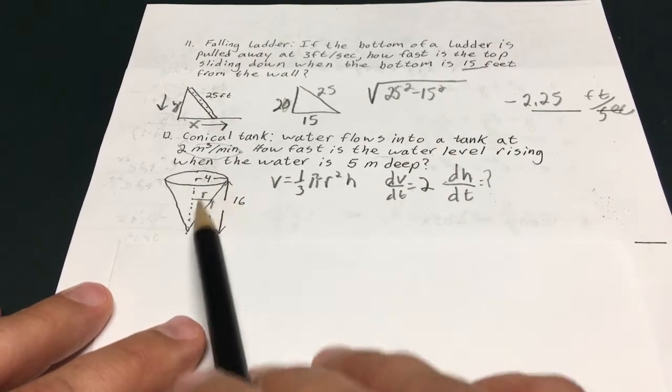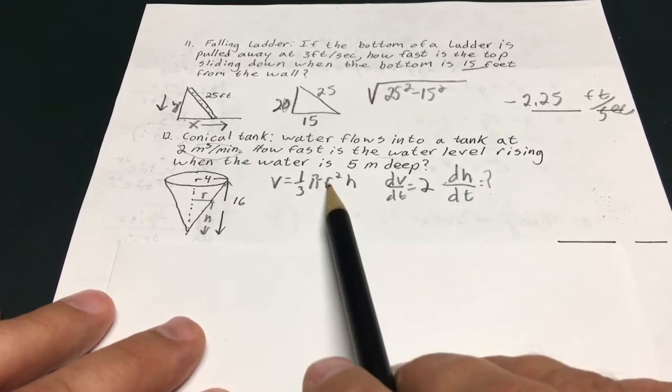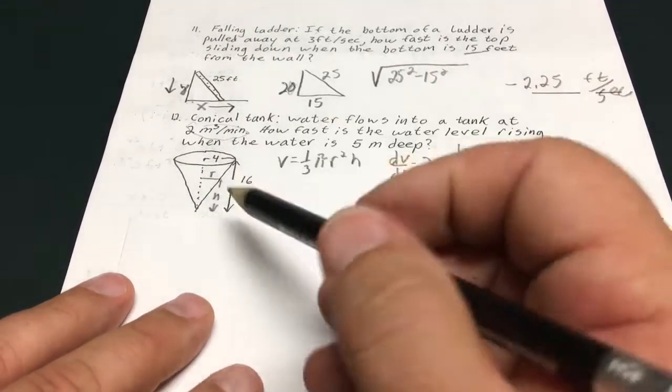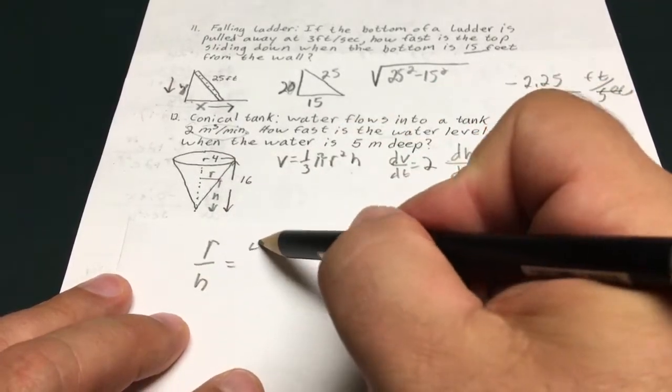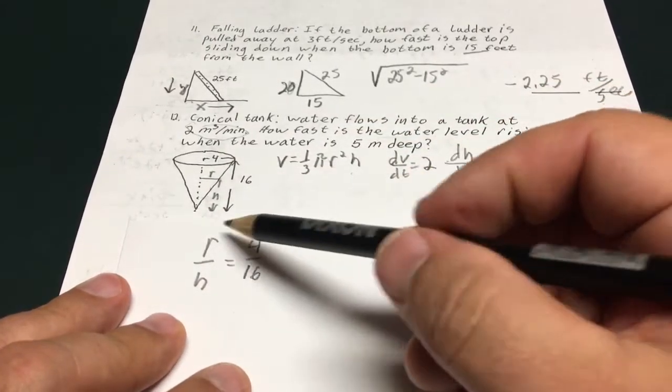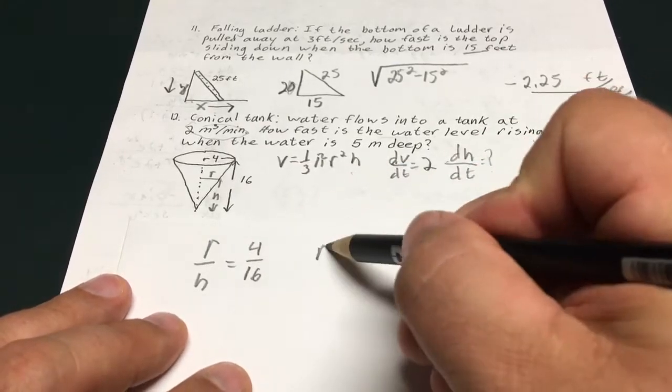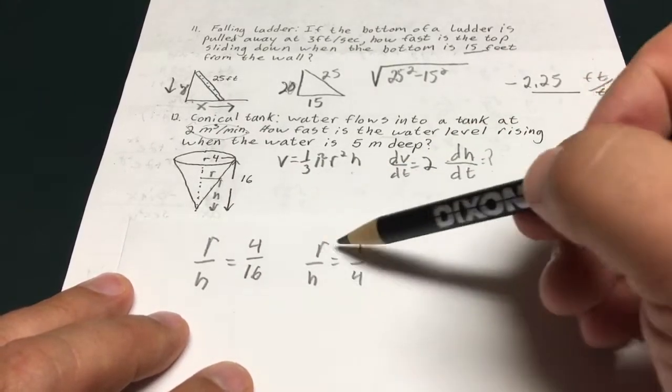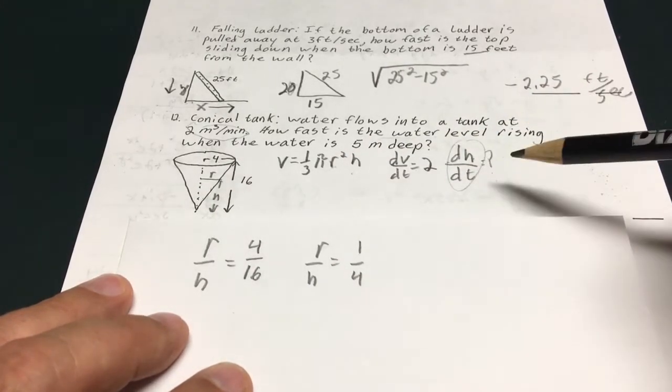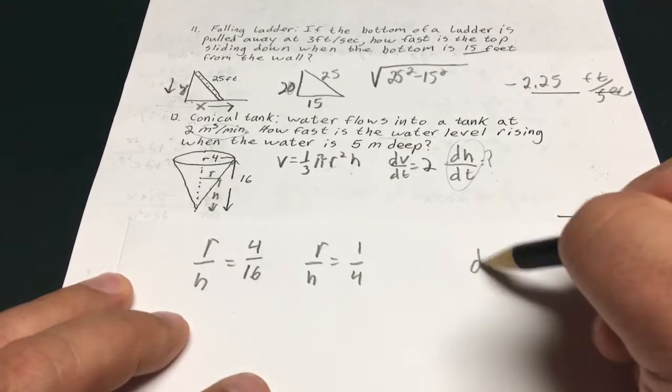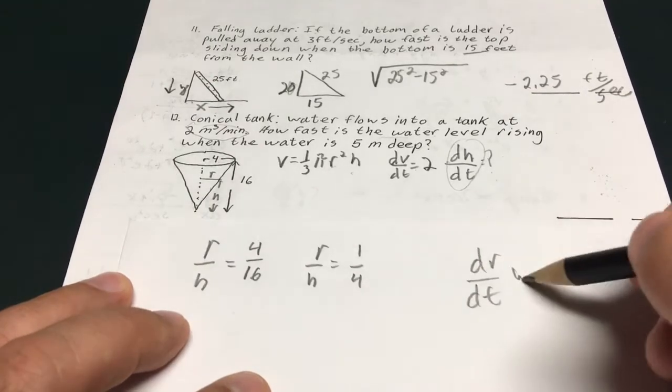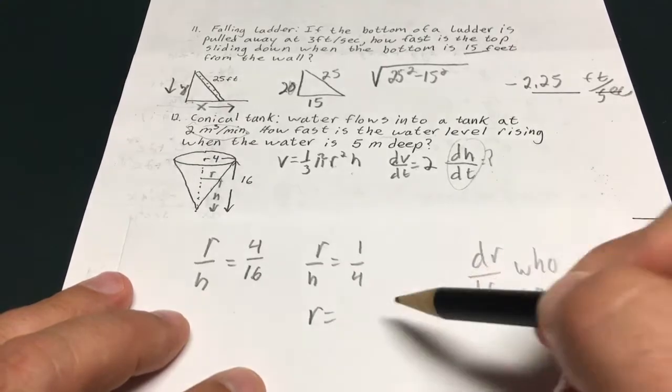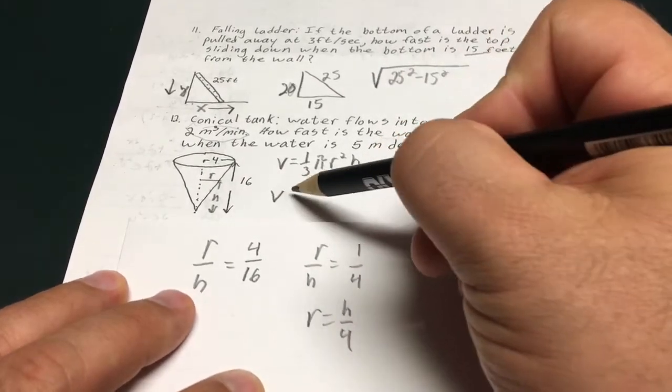So I want to set up a proportion to solve for either h or r over here and then plug it in to my volume formula and then take the derivative. So let's see. r over h. r over h equals 4 over 16. That's going to give me 1 fourth. So r over h equals 1 over 4. And I'm going to solve this for r and then plug r and plug h in for that. Because they want to know what dh/dt is.